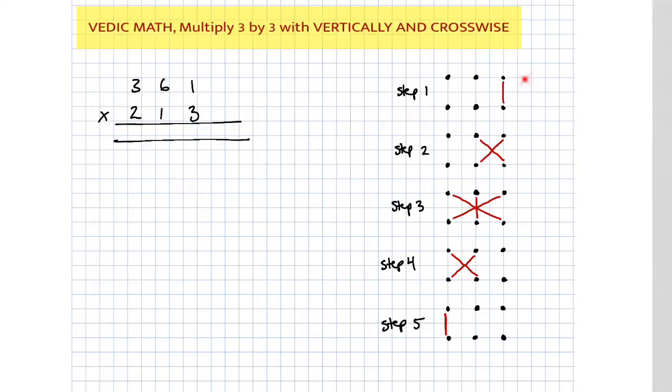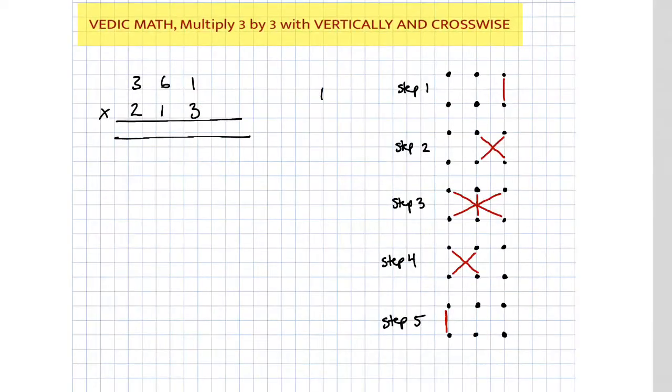Step number 1 is vertical. It's right here, these two right here, 1 times 3. So step number 1, we're gonna say that's 1 times 3. 1 times 3, we know that's 3. We could write it in like that.